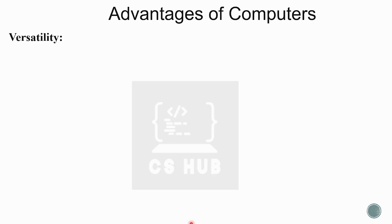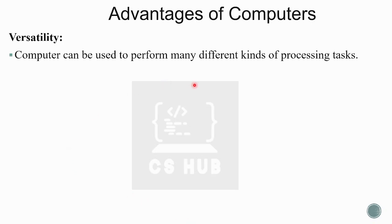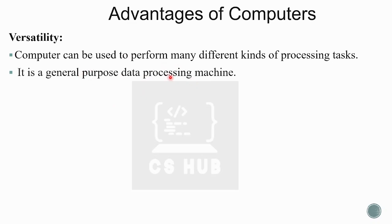Versatility. A computer is not just a calculator. You can do image editing, videos, music, games, typing or word processing — we can do everything. Computer can be used to perform many different kinds of processing tasks. It is a general-purpose data processing machine, not limited to a particular task.